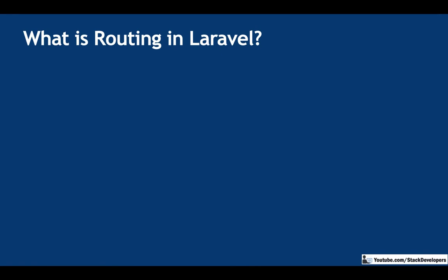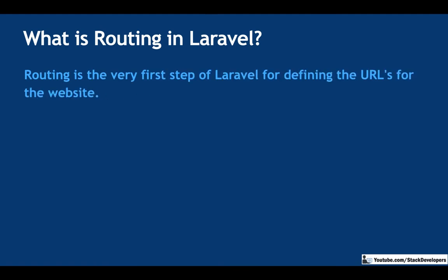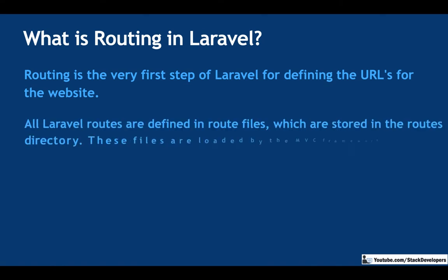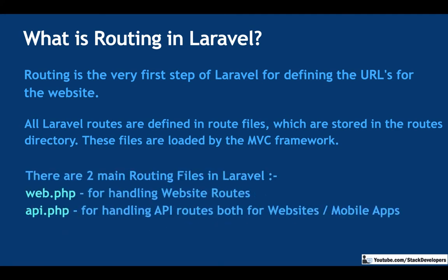What is routing in Laravel? This is a basic question we can expect in an interview. Routing is the very first step in Laravel for defining the URLs for the website. All Laravel routes are defined in route files stored in the routes directory, loaded by the MVC framework. There are two main routing files: web.php for handling website routes, and api.php for handling API routes.